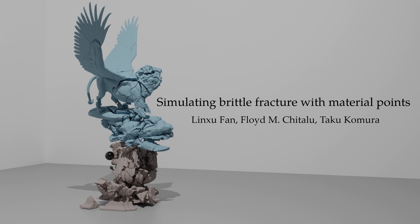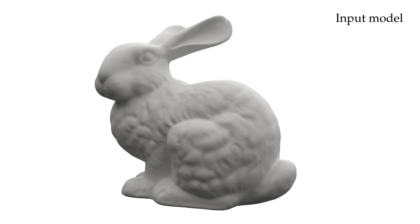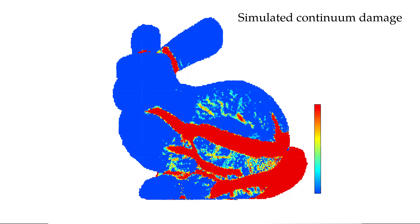Simulating brittle fracture is challenging due to the dynamic bifurcation and merging behavior of cracks. In this paper, we present a mesh-free crack propagation scheme using a material point method for simulating brittle fracture. Our approach offers a coupling of a local continuum damage mechanics formulation with rigid body methods to simulate and produce fracture effects.